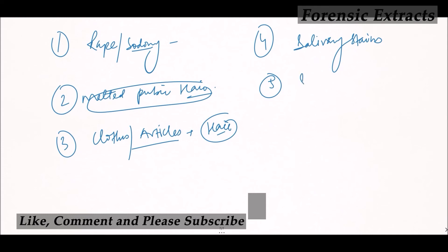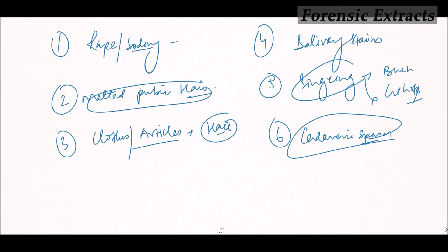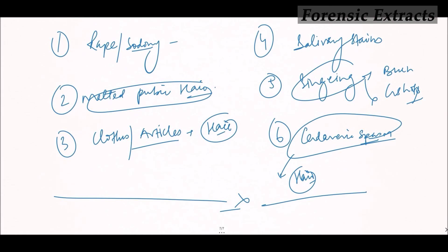Salivary stains may be present on hair and can be examined for DNA and other analyses. Singeing of hair can be seen in cases of burns or gunshot wounds. In cases of sudden death at peak emotional states, cadaveric spasm may occur, and a tuft of hair may be found clutched in the hand or other body part of the deceased.